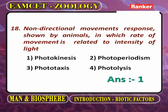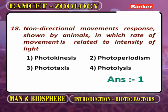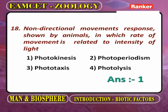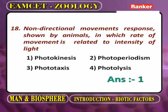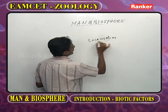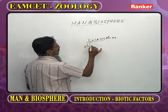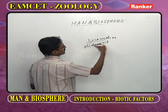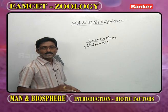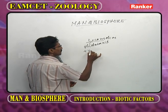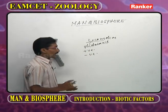Non-directional movements are responses shown by animals in which the rate of movement is related to the intensity of light. Under the effect of light on locomotion, we have to discuss photo taxes and photokinesis. Photo taxes refers to oriented locomotory movements, classified into positive and negative types.